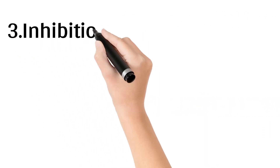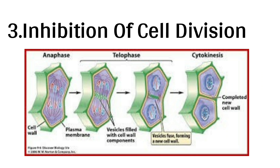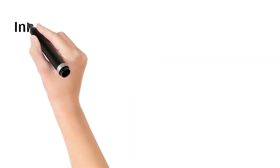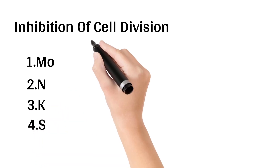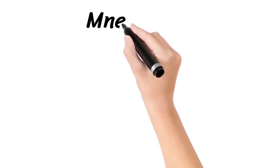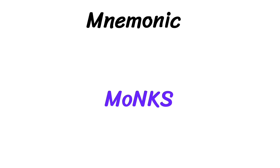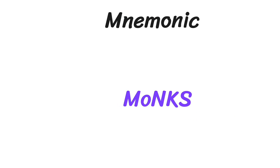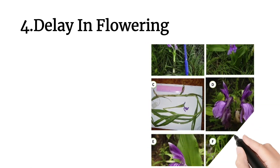The next deficiency symptom is inhibition of cell division, caused by the deficiency of four elements: molybdenum (Mo), nitrogen (N), potassium (K), and sulfur (S). The mnemonic is based on an image of a monk or saint. The mnemonic is 'MONKS,' where Mo = molybdenum, N = nitrogen, K = potassium, S = sulfur.